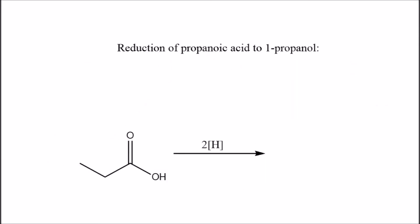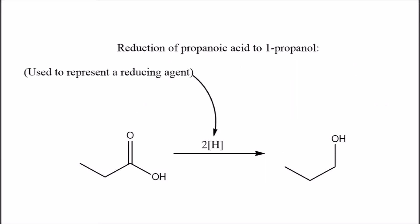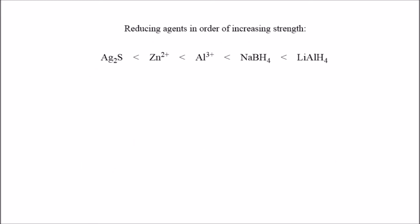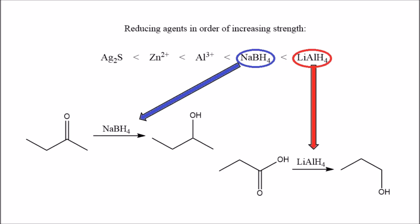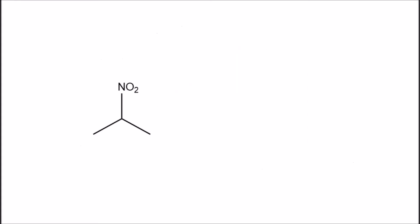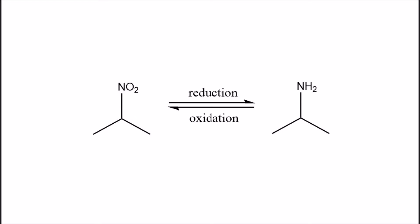Reduction does the opposite to oxidation, as it results in the reagent gaining electrons and often losing an oxygen atom or two. As with oxidation, stronger reducing agents will take the process one or two steps further, and heating under reflux will strengthen this. It's also important to remember that this can be carried out on many other types of compound, such as the reduction of a nitrate to an amine, or the oxidation of the amine back again.